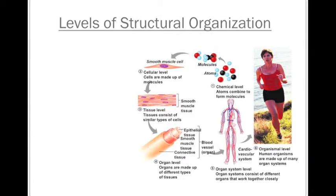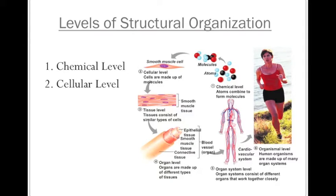This is where we get into our structural level of organization. If you think about us as an entire organism and you start breaking us down into our essential parts, we always start with our most basic level of structural organization at the chemical level. Chemicals combine and atoms combine to form molecules. And as these structures become more and more advanced, they will then turn into cells. So the chemical level turns into the cellular level. And then as you get groups of cells together, this will produce a tissue, so the third level would be the tissue level.